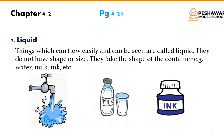Liquids are those things which can flow easily — jo easily flow kar saktay hai, jinki apni koi size shape nahi hoti. They take the shape of the container, matlab jis cheez mein hum in ko daalenge, yeh us cheez ki shakal ikhtiyaar kar lete hai. For example, when you pour some water or milk in the glass, you will see that it takes the shape of the glass. So it means that they do not have their own shape and size.